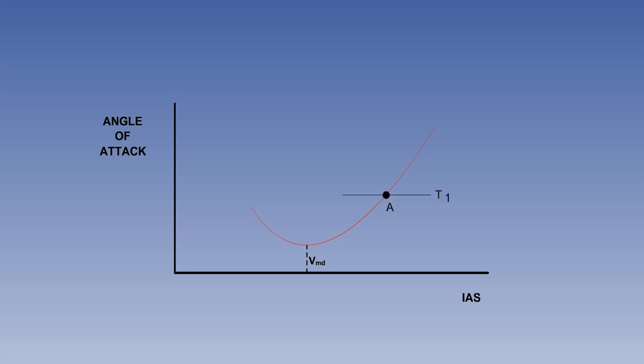To fly the speed at point A requires a thrust of T1, and to fly at speed B requires a thrust of T2. If the thrust is increased to T2 when the aircraft is at point A, the thrust will be greater than the drag, and the aircraft will accelerate in proportion to the excess thrust AC until it reaches point B, where the thrust and drag are again equal. If T2 is the maximum thrust available, then the speed at B will be the maximum speed achievable in level flight.